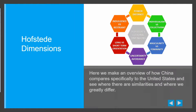The Hofstede dimensions take a look at a culture and break it down into six different areas: starting with power distance, the country's individualism versus collectivism, masculinity versus femininity, uncertainty avoidance, long-term versus short-term orientation, and a country's indulgence versus restraint. In this section, we'll take a look at the overview of how China compares very specifically to the United States and look at these similarities and differences.